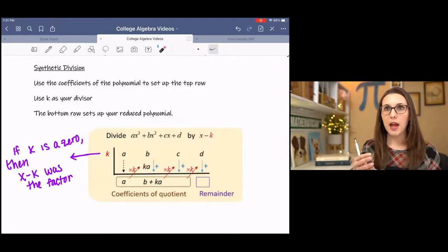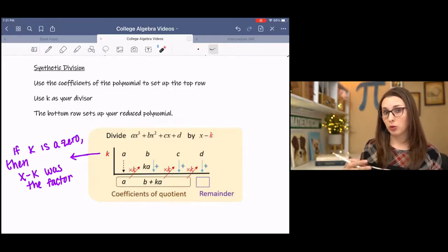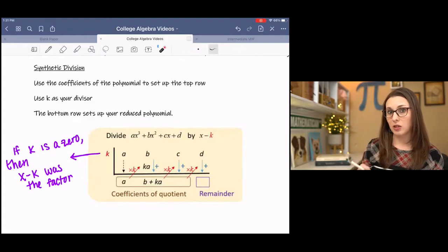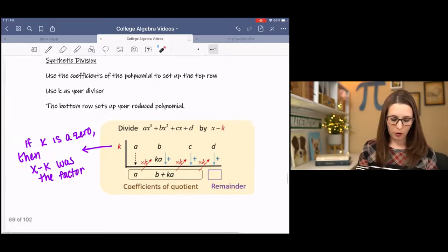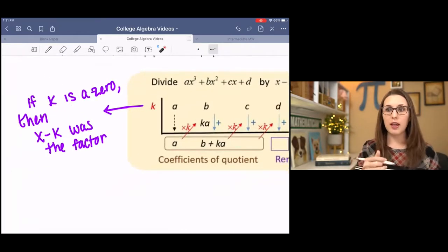For x minus k to be a factor, then the zero that we're looking at would be k. Don't get lost in the letters. Over here, if I reword that, if k